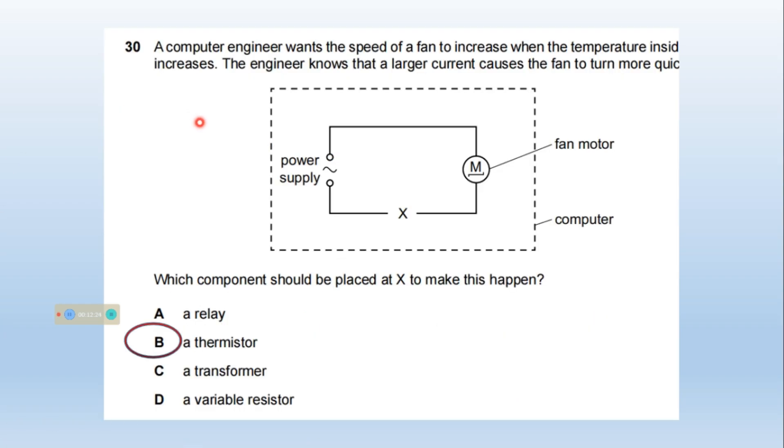A computer engineer wants the speed of a fan to increase when the temperature inside increases. The engineer knows that a larger current causes the fan to turn more quickly. Which component should be placed at X to make this happen? We know that a thermistor is a resistor whose resistance is dependent on temperature. So when temperature increases, resistance decreases, and it will lead to a larger current. So option B is right, thermistor.